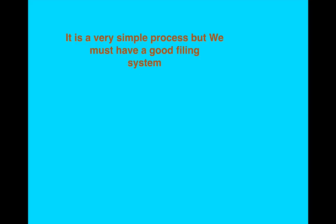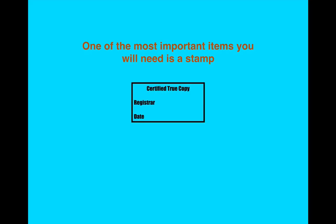In establishing our registry, we know where we have the evidence and where we have to go. It's a very simple process, but we must have a good filing system. You will also need a few other items. One of the most important items you will need is a stamp — certified true copy. Get one made; they only cost a few dollars. The registrar, you just need to put a squiggle there — don't put your real name or anything — and put the date on which you certify the copies. By the end of this you will never go to a Justice of the Peace, notary, or anything like that ever again.